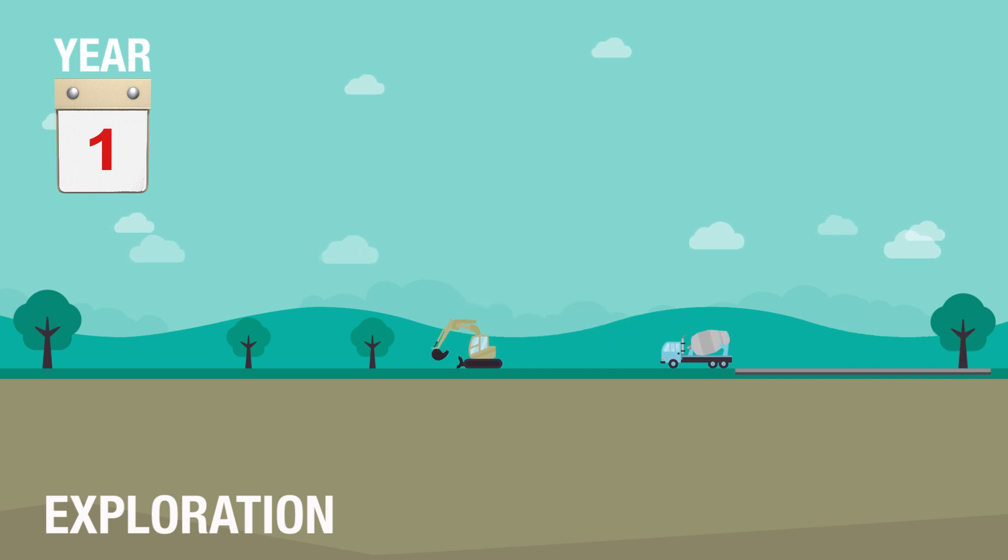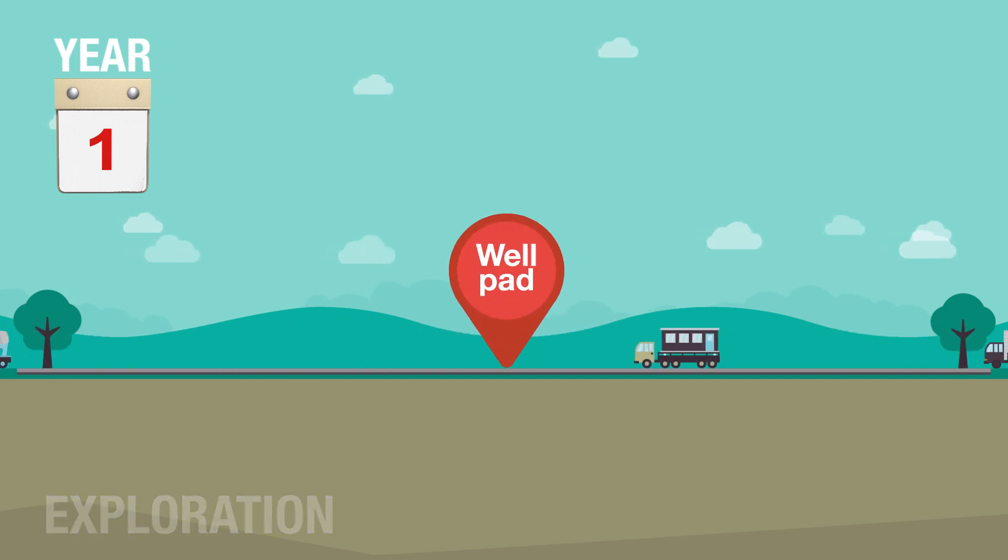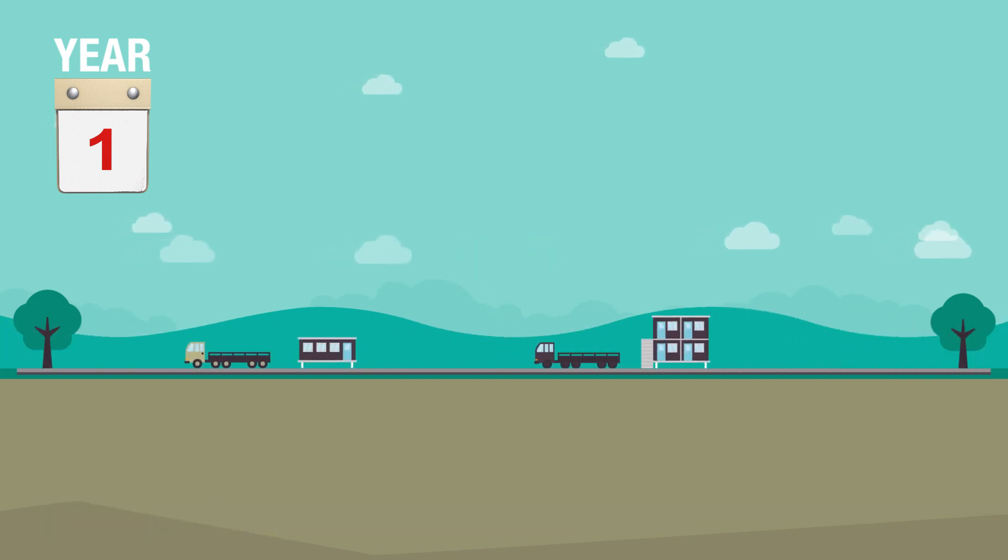A typical exploration site starts with construction of a well pad. It may contain port-a-cabins for staff living quarters and offices, water and waste storage, and processing facilities. During drilling there will also be a drilling rig. The entire site is around one to two hectares, the size of one to two football pitches.